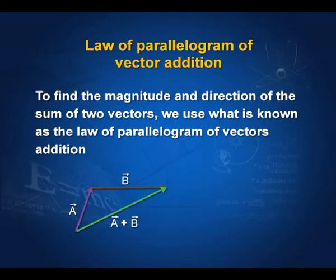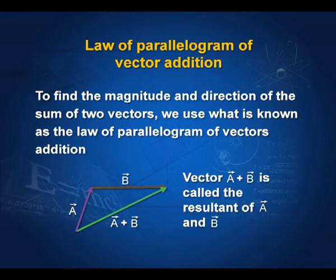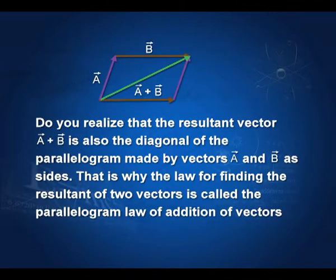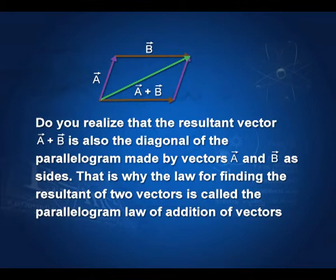Addition of two vectors can also be done by a law called the parallelogram of vector addition. The sum of two vectors A and B — written A plus B — is called the resultant of A and B. Here I have vector A and vector B, and I added A to B to get vector A plus B represented by a green line. This is actually the diagonal of a parallelogram whose sides are vectors A and B — that is why it is called the parallelogram law of addition of vectors.